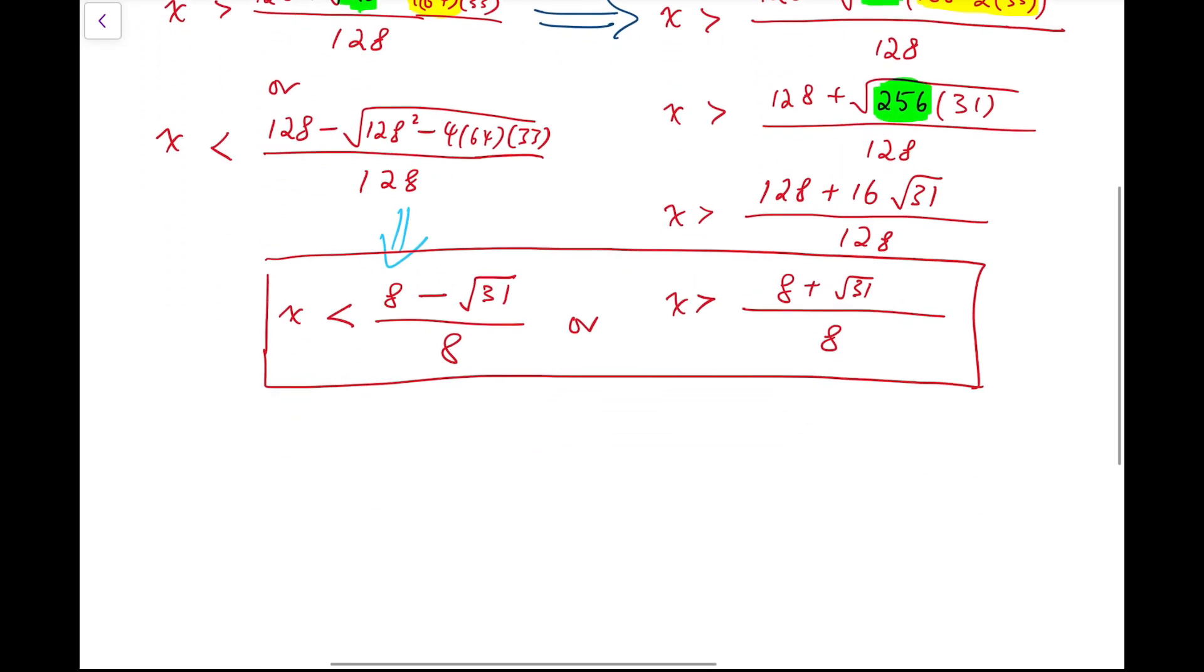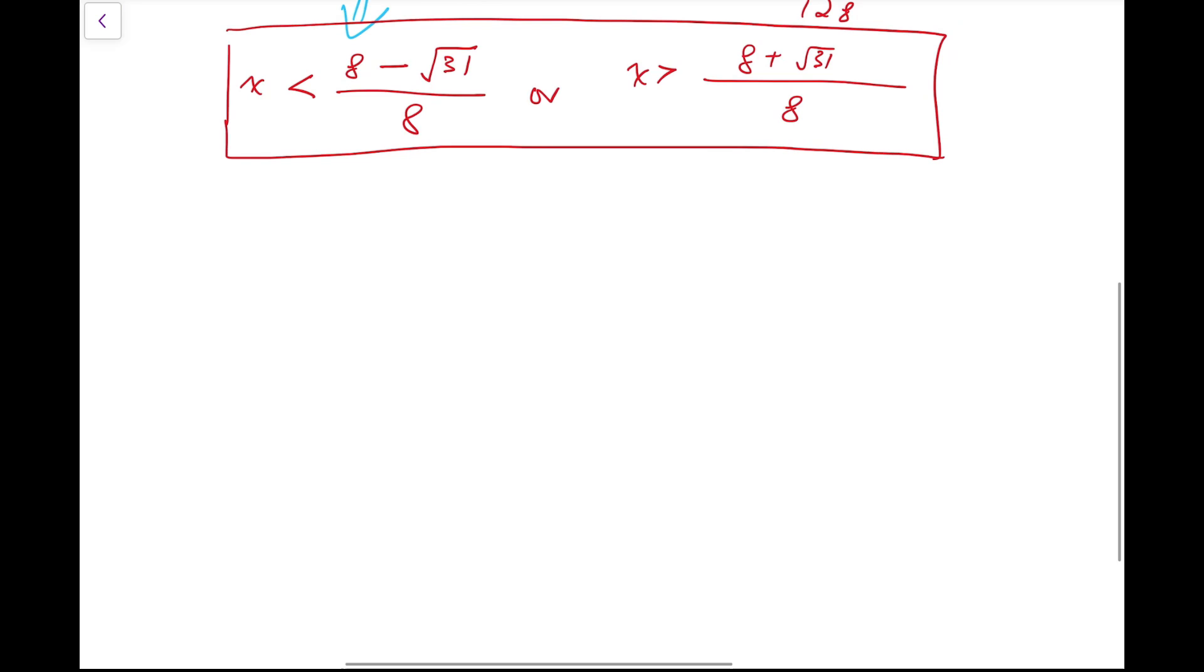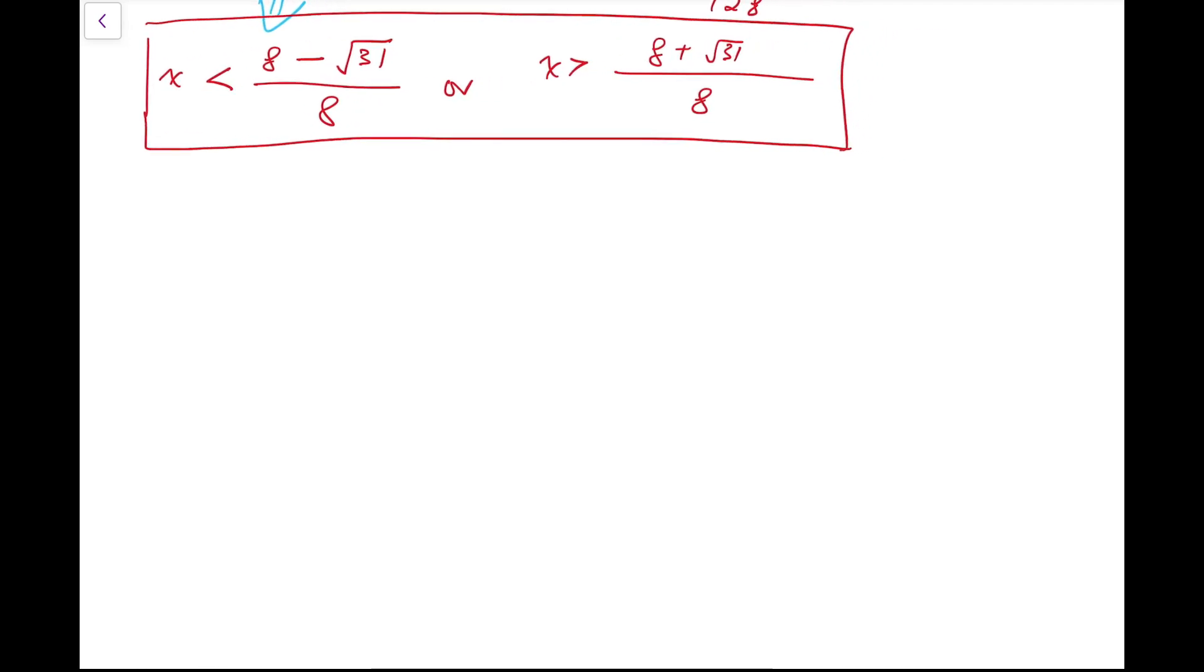However, we need to take care of the natural constraints on our original inequality. Because sometimes when we square both sides of an equation or an inequality, we may create some extra cases that we might have to reject. Now, recall the inequality is 3 minus x minus square root of x plus 1, square root of 1 plus x, is greater than a half. So firstly, x must be such that under this square root sign it's well defined, which means these numbers, 3 minus x and x plus 1, must be non-negative. So our first natural constraint is that x must be between minus 1 and 3.